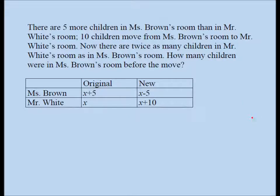Let's read the question once again. Now there are twice as many children in Mr. White's room as in Ms. Brown's room. So the first question I'm going to ask is which classroom has more students? Mr. White's classroom has more students. The question says that, and you can also see it from here. It's ten more than X and Ms. Brown is five less than X. So Mr. White's classroom has more children. It also says that Mr. White's classroom has two times as many children as in Ms. Brown's classroom.